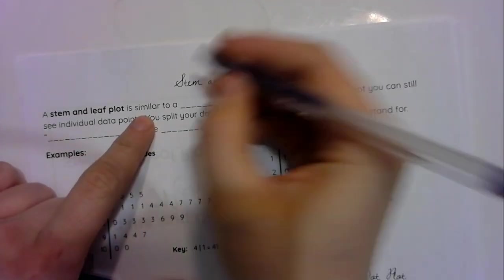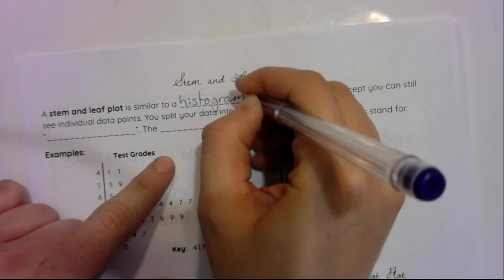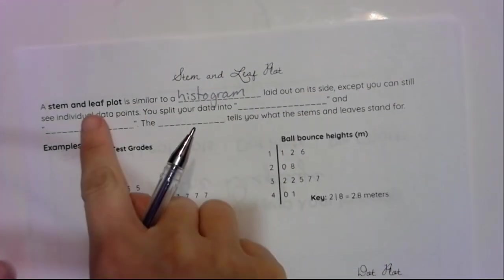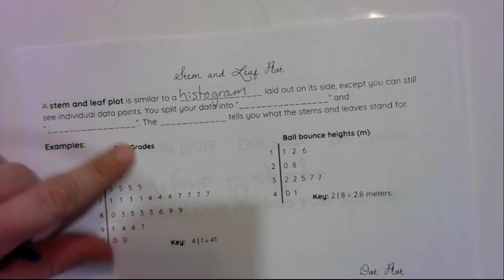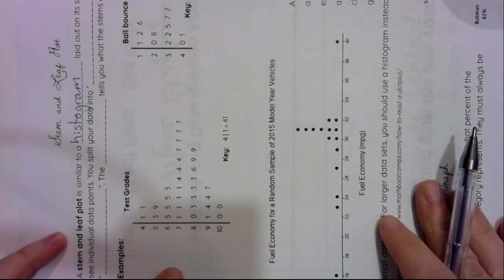Let's start at the top. A stem and leaf plot is similar to a histogram, laid out on its side, except you can still see individual data points. Here's what I mean. Here's a stem and leaf plot. Flip it over. Kind of looks like a histogram. These would be your bars of your histogram. Kind of the same thing, except you can see the individual numbers.